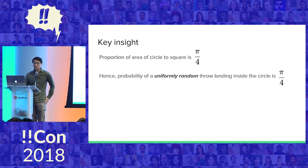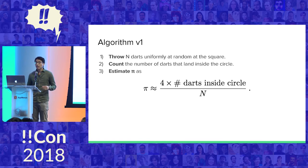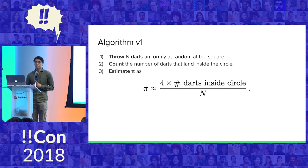So how are we going to turn this key insight into an algorithm? We're just going to throw a bunch of darts at the square, count the number of darts that land inside the circle, and our estimate is just going to be four times the number of darts inside the circle over n, which is the number of darts that we threw total. And that's going to give us an estimate of pi.